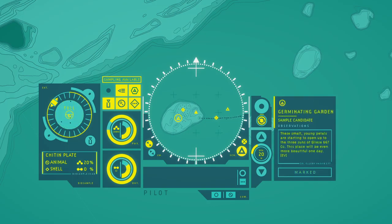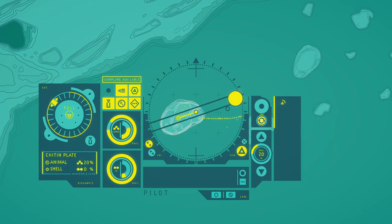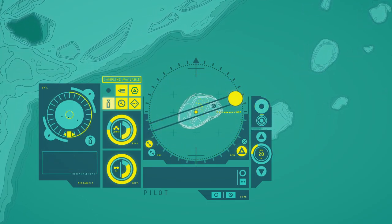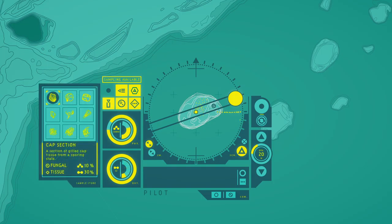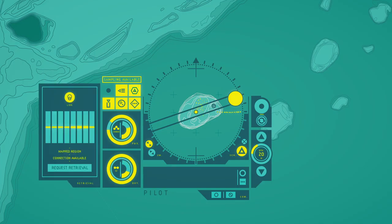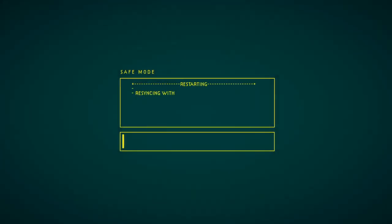The small, young petals are starting to open up to the rays of Beezle 667's sun. This place will be even more beautiful one day. Can we afford a cross section? No, we can't afford it. We need to go back. And we will need to get back here afterwards. But that will do next time. Well, thank you very much. Stay alive and see you soon. Bye!